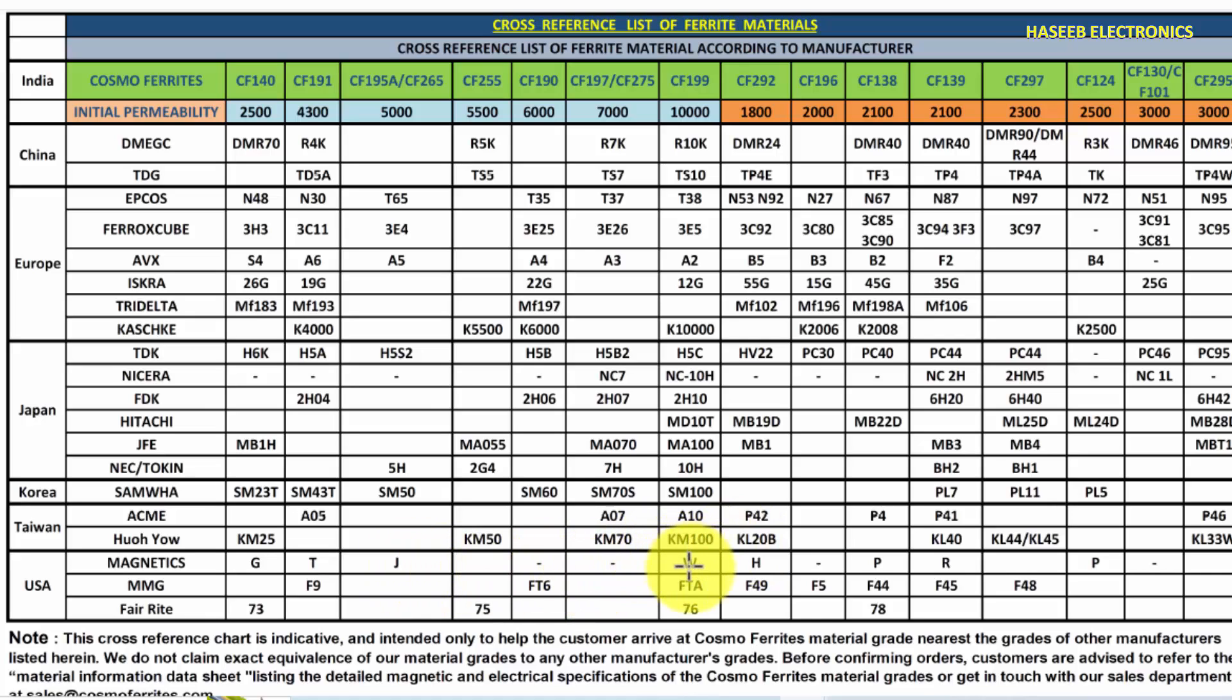From two manufacturers, same way MMG FTA Ferrite 76, Hitachi has MD10T. All these materials are similar. So we can consult cross-reference list for ferrite materials. If this video is informative, hit the like button. If you have any question, please write in the comments. Thanks for watching.